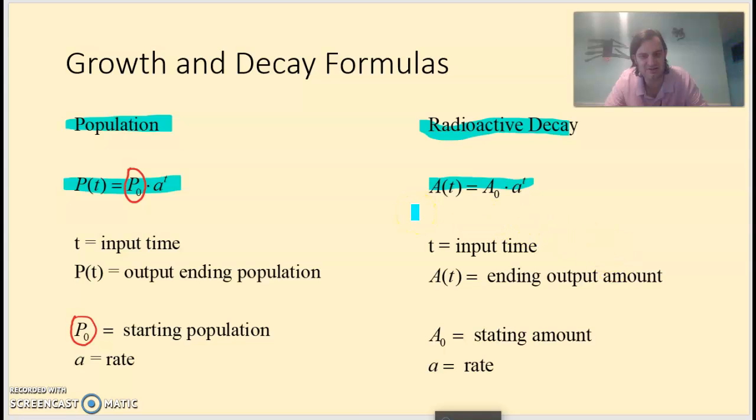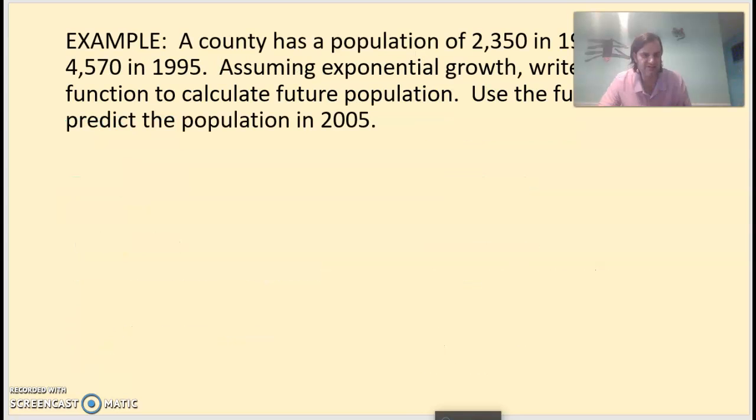A(t) is the output. A sub 0 is the starting amount. It says stating amount, let's just leave that alone. We'll fix it later. And little a is the rate. So let's go through and try and set up a couple of functions using these models. See what we can do. Oh, my picture's in the way, so let's move me.